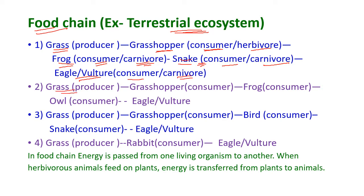The second food chain: grass is eaten by grasshopper, grasshopper is eaten by frogs, frogs are eaten by owl, and owls are eaten by eagles or vultures. In this chain, grass is the producer; grasshopper, frog, owl, and eagle or vulture are all consumers.